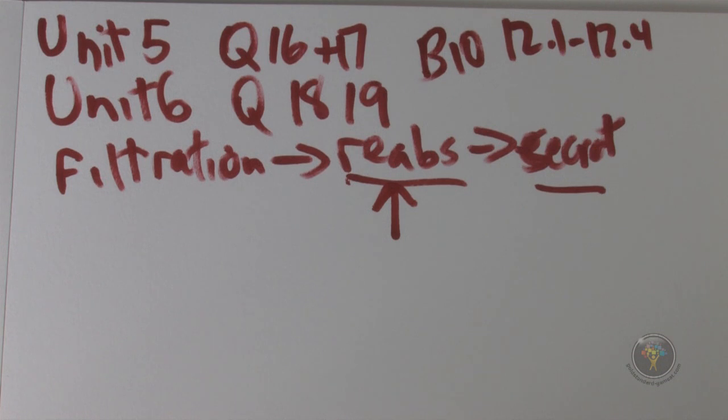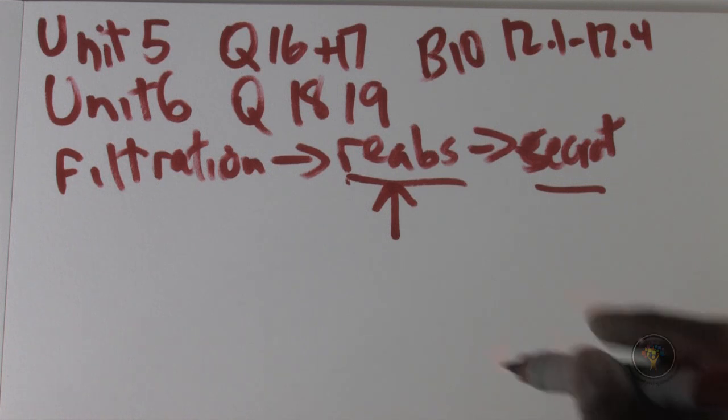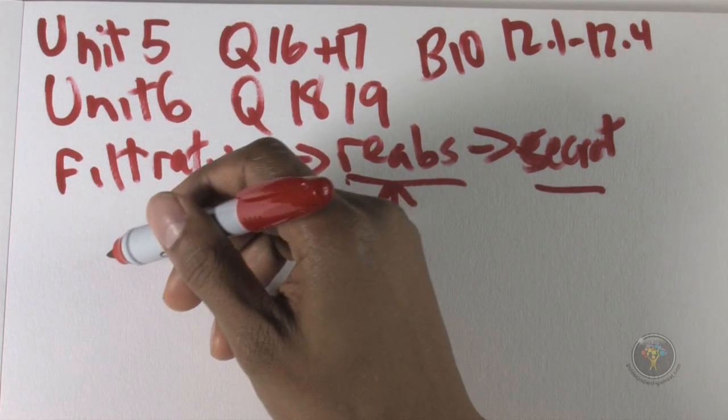Question 19: Figure 1 indicates all glucose is absorbed from the filtrate below a filtrate concentration of about 2.2. So I'm looking, and indeed, if you look carefully at the graph...